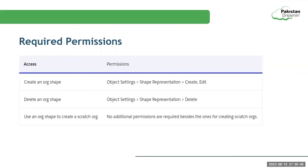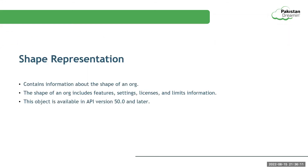A Salesforce admin for the Dev Hub org must assign permissions to users who plan to create org shapes or create scratch orgs based on the org shape. If you already have a permission set for Salesforce DX users, you can update it to include this access. The main permissions needed are the create, edit, and delete permissions on the Shape Representation object, where the scratch org details are stored. The Shape Representation object contains information about the shape of an org, which includes features, settings, licenses, and limit information. This object is available in API version 50 and later.